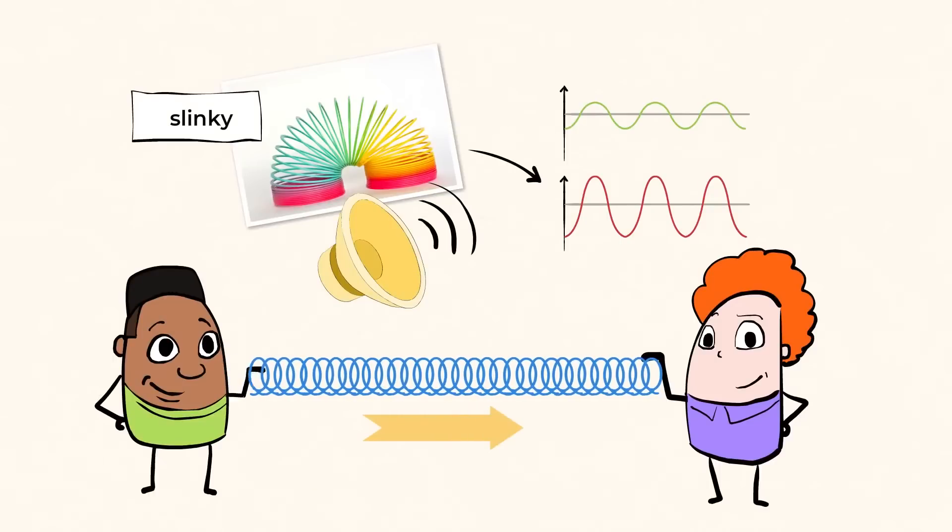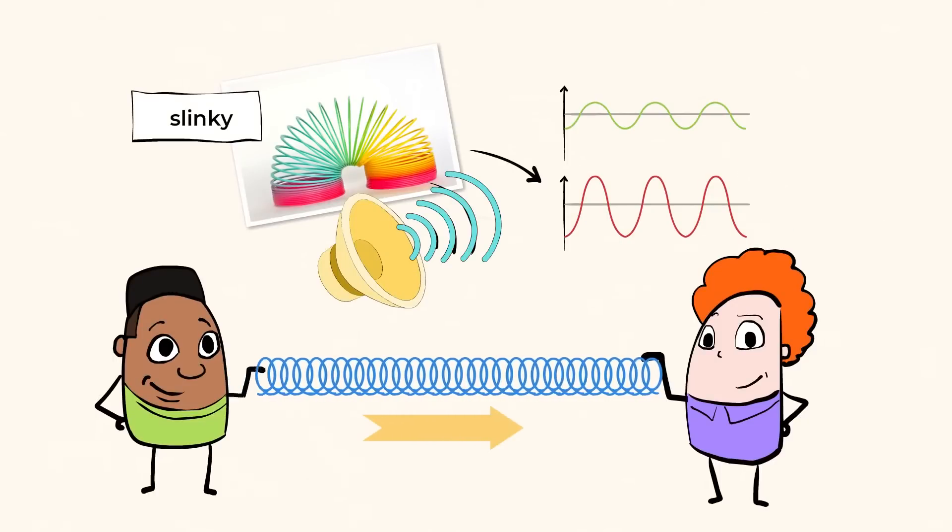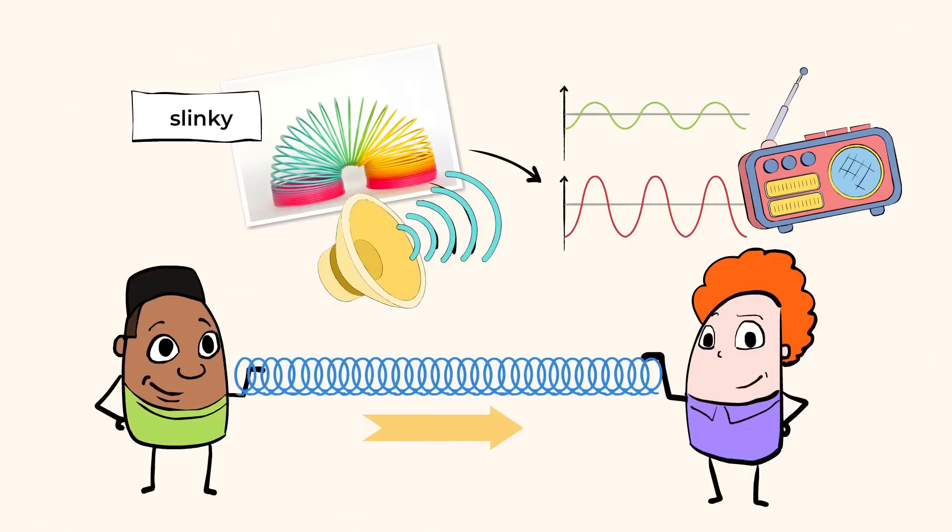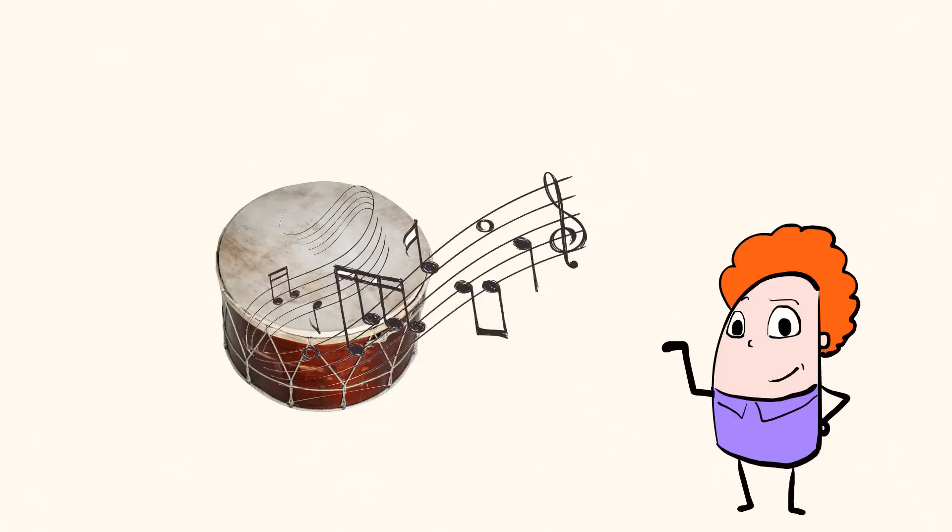All this information is useful for understanding things like sound waves. So, turn on the music and let's make some mighty discoveries. This drum is making sound. But, how does a drumstick hitting the drum create what we hear? It's all about the waves.